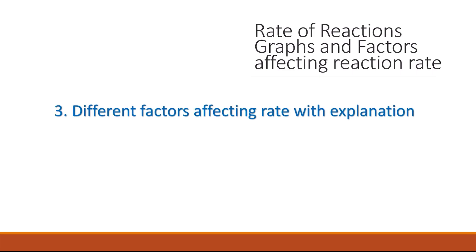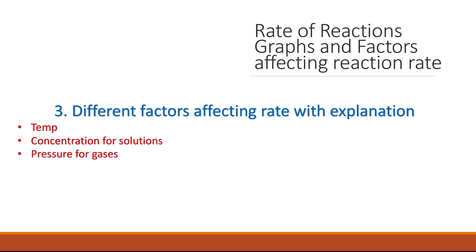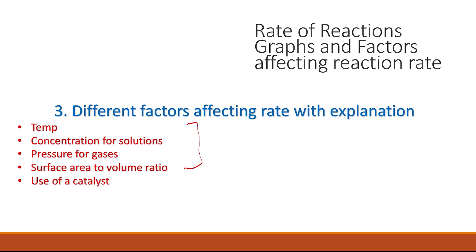You need to know the different factors affecting rate with explanation. These include temperature, which increases the rate with higher temperature; concentration of a solution, which applies only to solutions; pressure, which applies in the case of gases only; surface area to volume ratio, where an increase raises the rate of reaction; and the use of a catalyst. You should be able to use collision theory to explain why these factors increase the rate. For catalysts, it is due to the decrease in activation energy, because the catalyst provides an alternative pathway for the reaction.